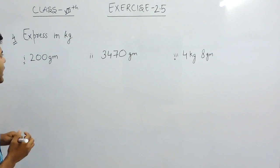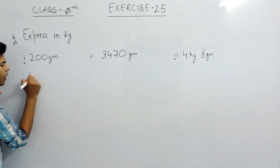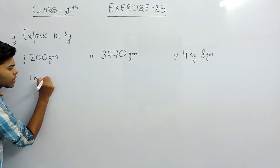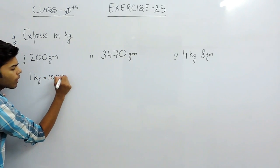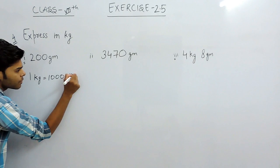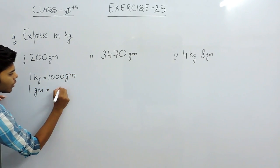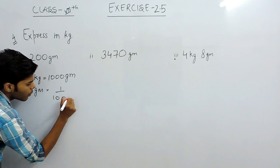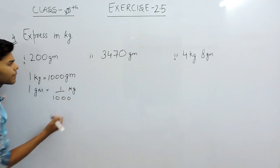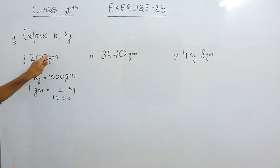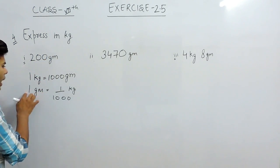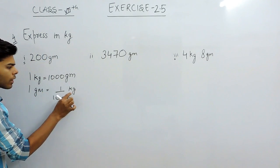We have to express it in kgs. Now we should know that 1 kg is equal to 1000 gram, and 1 gram will be equal to 1 upon 1000 kg. We know that this is gram and 1 gram equals 1 upon 1000 kg.